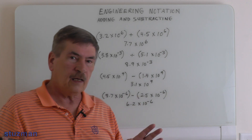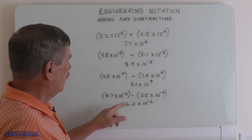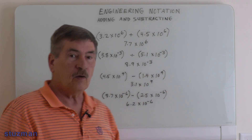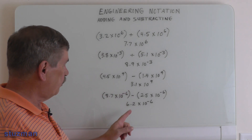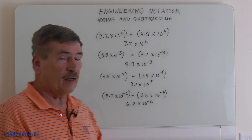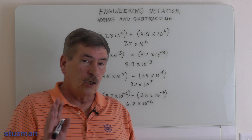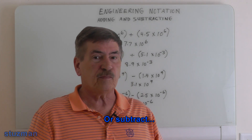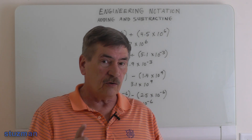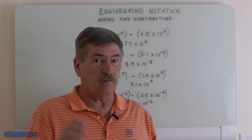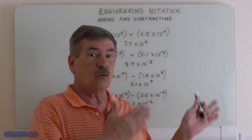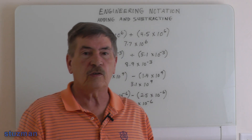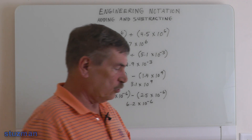What you should be seeing now is that these powers are the same. For example, 3.1 times 10 to the 9th — in both cases the exponent is 10 to the 9th. So you should be thinking that to add these numbers together the exponents have to be the same. If they're not, we're going to have to work on one of them to make it equal to the other one, which we'll demonstrate with a couple of examples here.